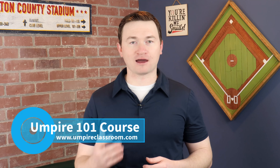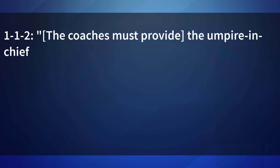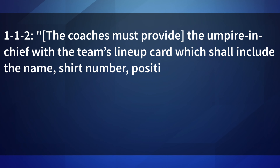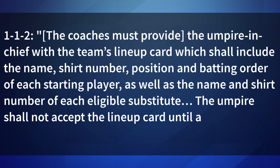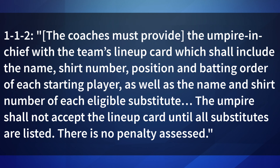The first step to having clear and quick substitutions in your game comes from the pregame conference and the exchange of lineup cards. Rule 1-1-2 states that the coaches must provide the umpire in chief with the team's lineup card, which shall include the name, shirt number, position, and batting order of each starting player, as well as the name and shirt number of each eligible substitute. The umpire shall not accept the lineup card until all substitutes are listed; there is no penalty assessed.